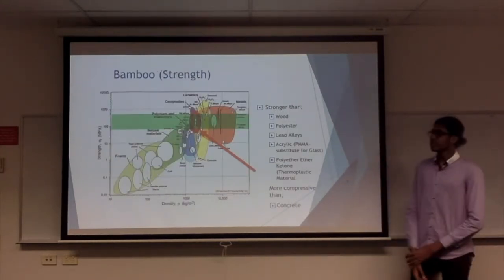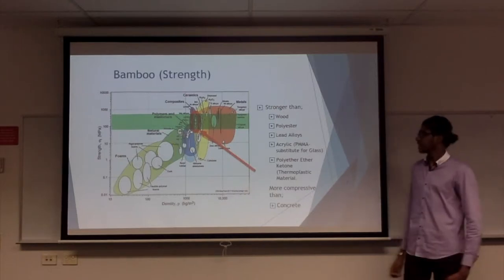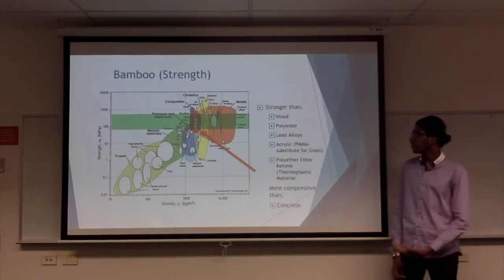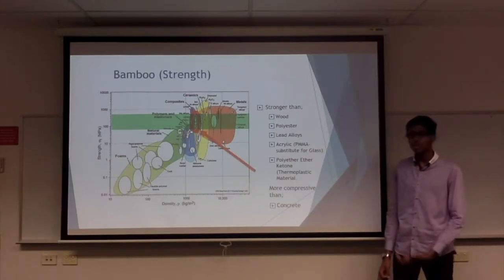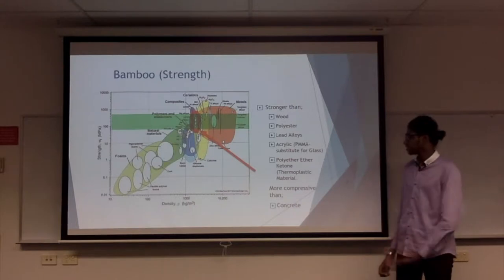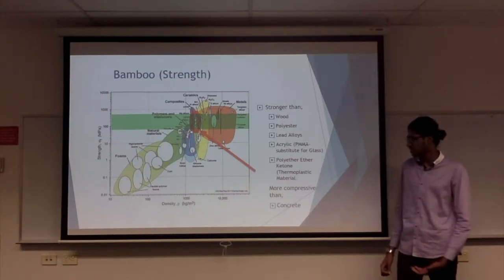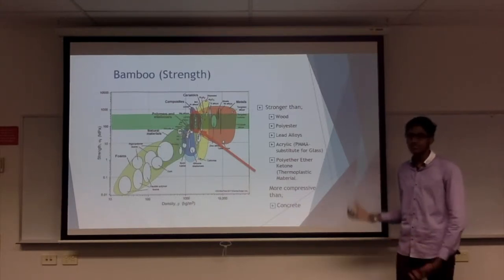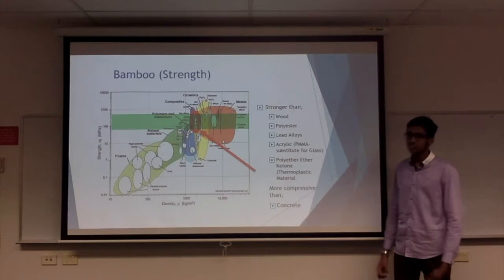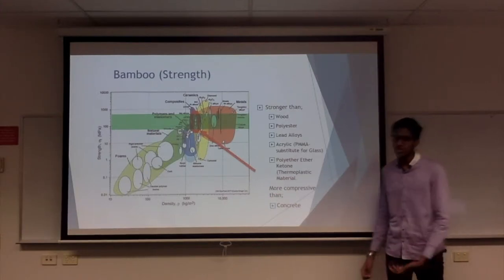Bamboo's strength is highlighted in green. As you can see, it is stronger than its counterparts of wood, polyester, alloys, acrylic, and urethane, also known as thermoplastic, and is also more compressive than concrete and stronger than steel when braided and wet.